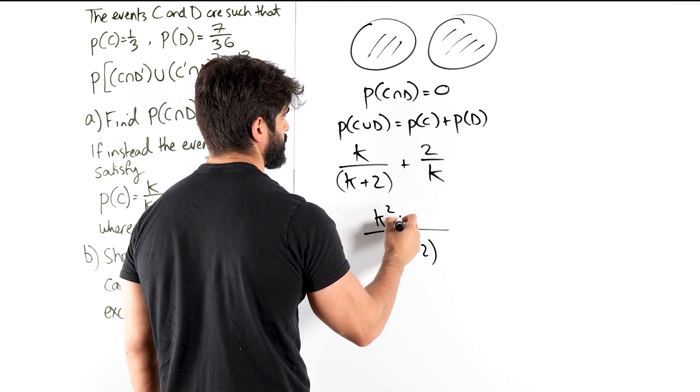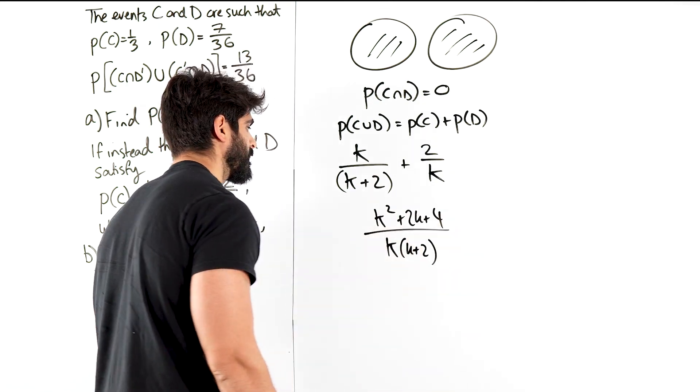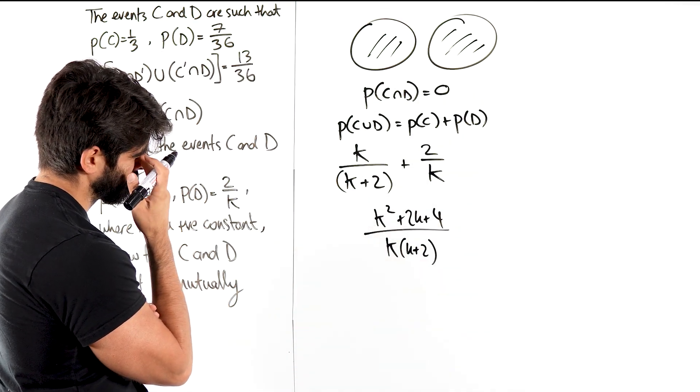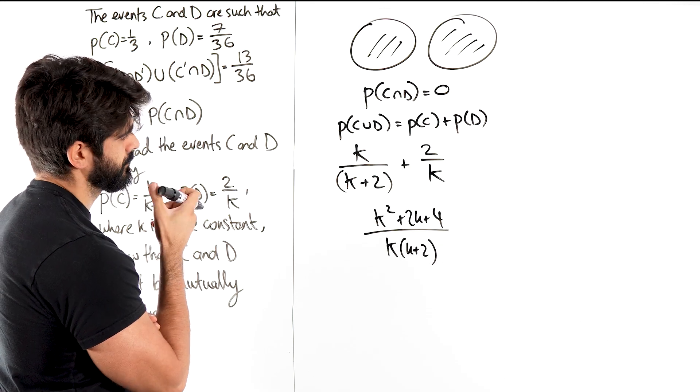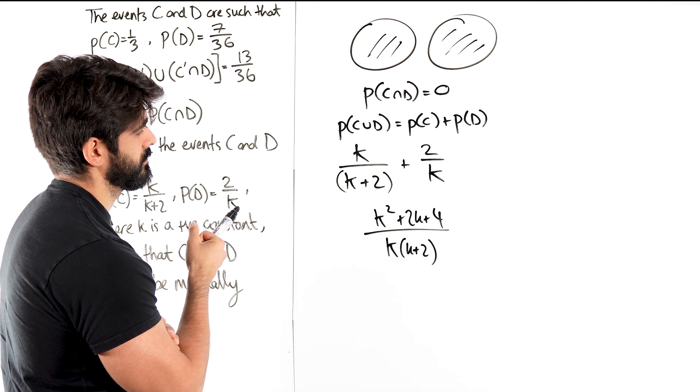So we have K lots of K plus 2. K squared plus 2 lots of this is 2K plus 4. Now why is that not possible?